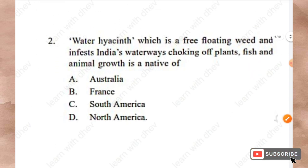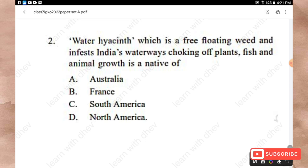Question 2: Water hyacinth, which is a free-floating weed that infests India's waterways, choking plant, fish, and animal growth, is a native of which country? Options: Australia, France, South America, North America. The right answer is Option C — South America.